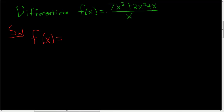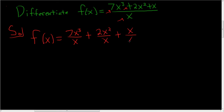So f of x can be written as 7x cubed over x, plus 2x squared over x, plus x over x. You can always do this — you can break it up, and in this case it makes it a lot easier.